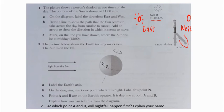Part B: Draw a line to show the path that the sun seems to take across the sky from sunrise to sunset, and add an arrow to show the direction in which it seems to move. The sun seems to move from here, rises here, then in the middle at 12 AM, and then sets on the right side on the west.